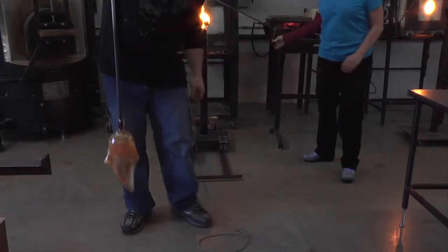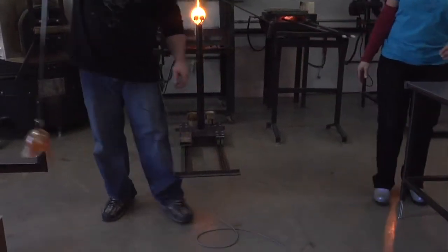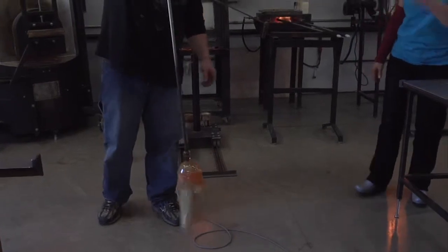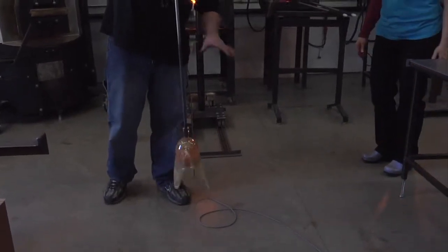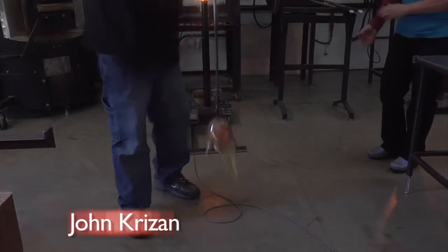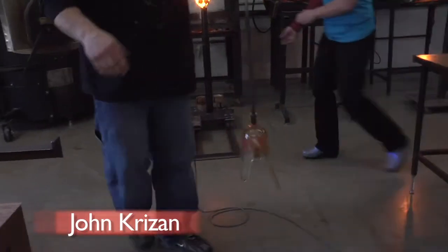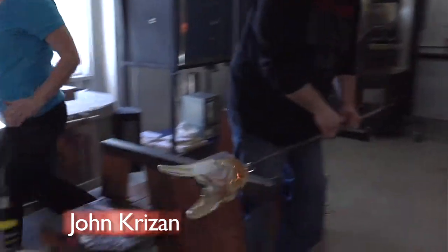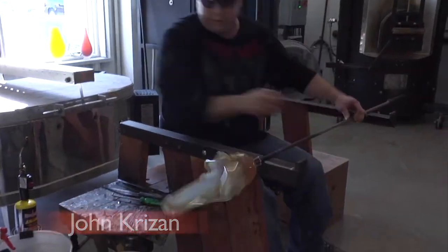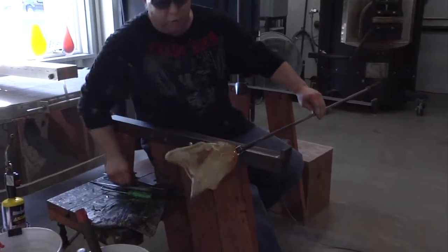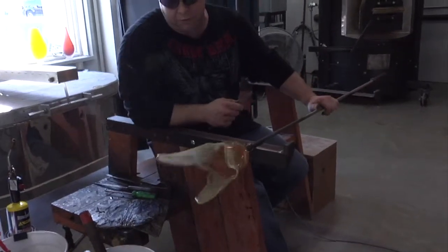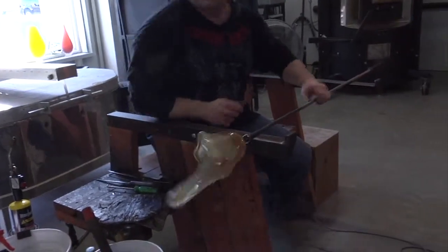And so when you swing it back and forth, you're just pulling it down and shaping it at the same time? Yeah, and if I spin it faster, those centripetal forces, it flaps out. So you don't always get exactly what you're going for. I think it's beautiful.